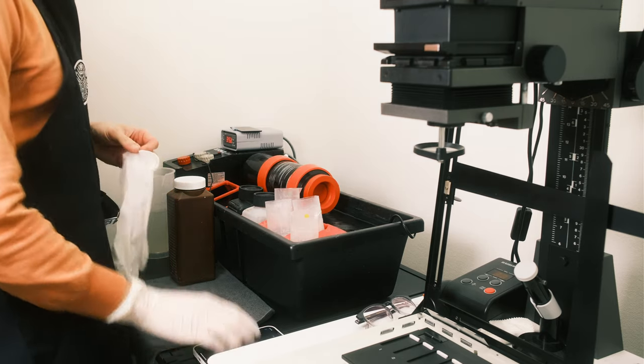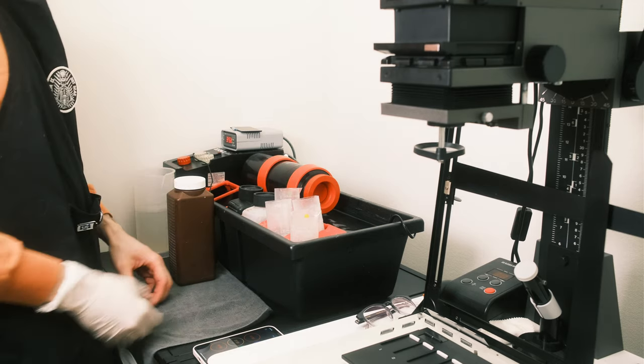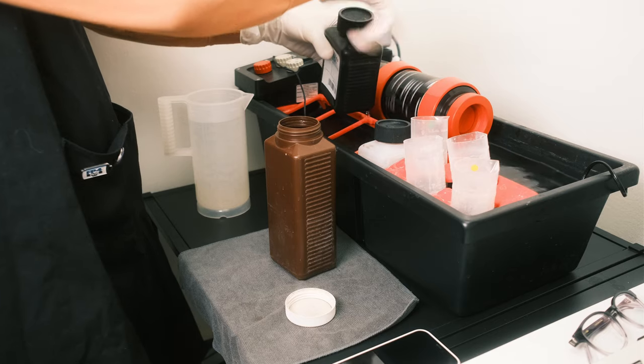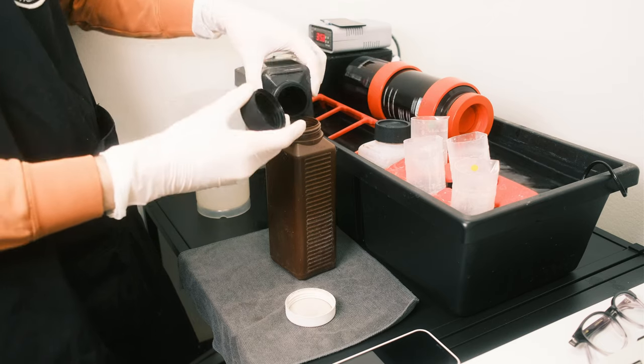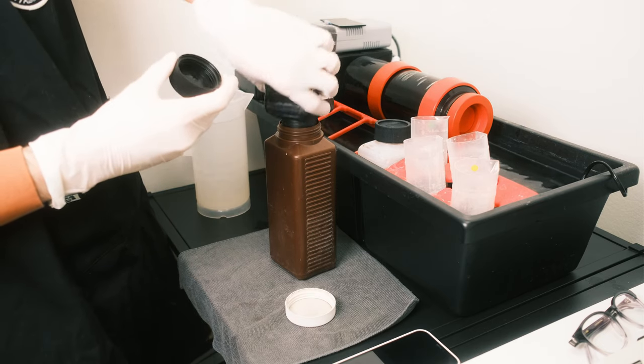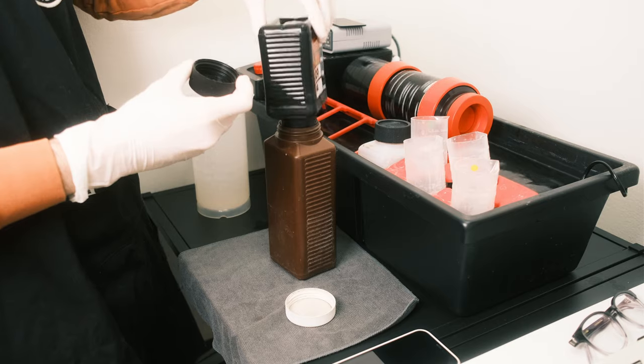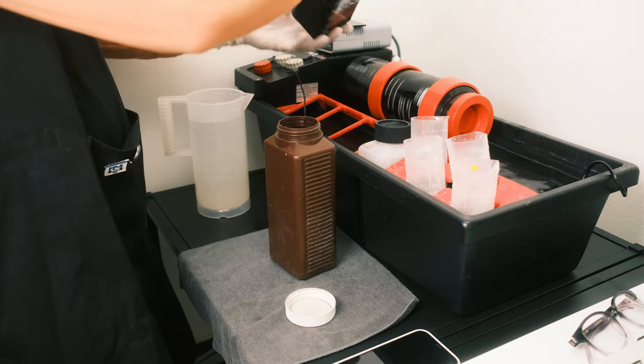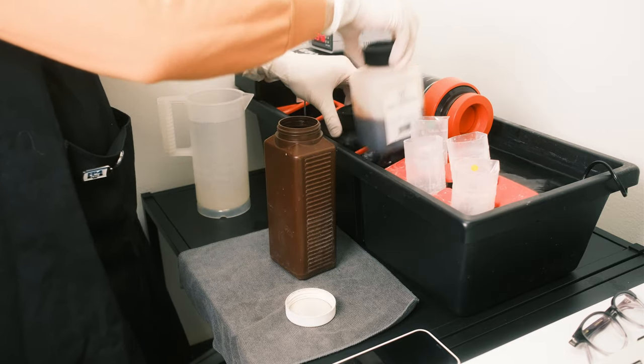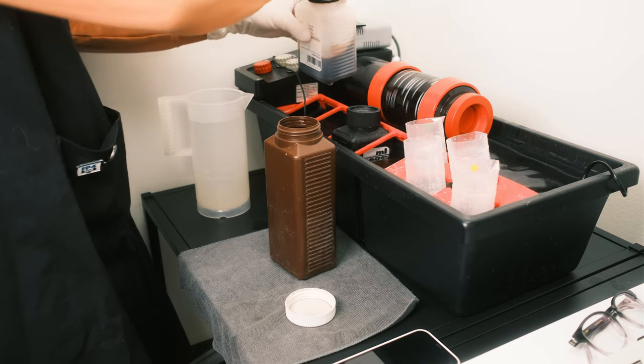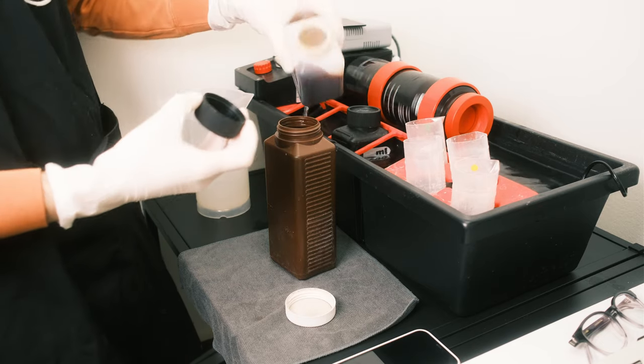I usually use 1 minute for developer and 1 minute for bleach fix. So let's remove the old chemistry from the bottles and as you can see the developer is completely black and it's a good sign that you need to change the developer. Usually I almost all the time exhaust the developer first.